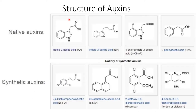Now this is the structure of auxins. One is native auxin and another one is synthetic auxin. In native auxin, examples are indole-3-acetic acid (IAA), indole-3-butyric acid (IBA), 4-chloroindole-3-acetic acid, and 2-phenylacetic acid (PAA).